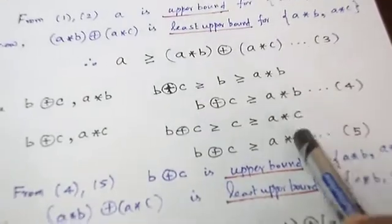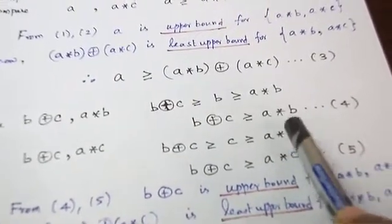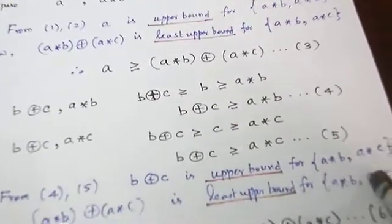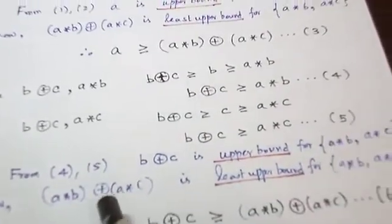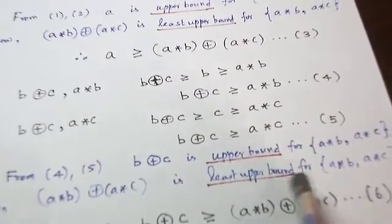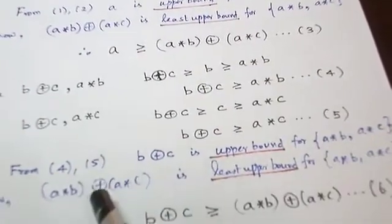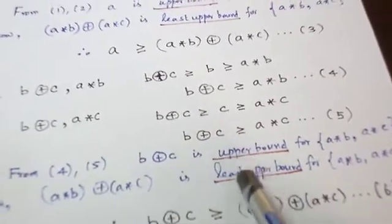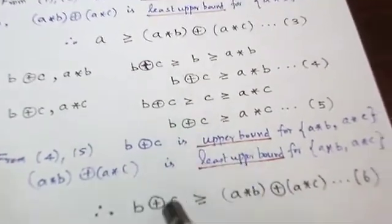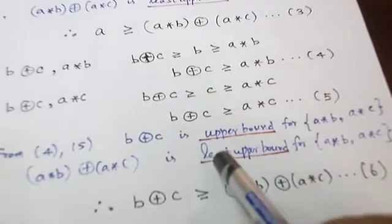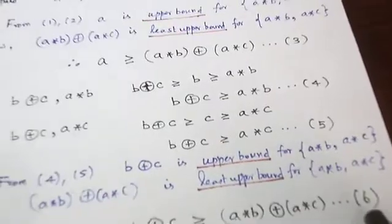Combining inequalities 4 and 5, B+C is an upper bound for A★B and A★C. We know the standard least upper bound for these two elements A★B and A★C is A★B + A★C. Comparing these two, B+C is greater than A★B + A★C since A★B + A★C is the least element. This is inequality 6.